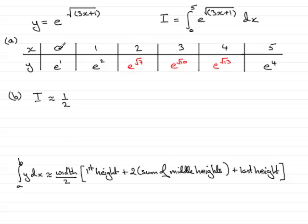Then it's the first height or the first y value, so that will be e to the 1, plus twice the sum of the middle heights. So that would be 2 times the sum of these y values: e squared plus e to the root 7 plus e to the root 10 plus e to the root 13. And then plus the last height, which will be e to the 4. That is the trapezoidal rule.